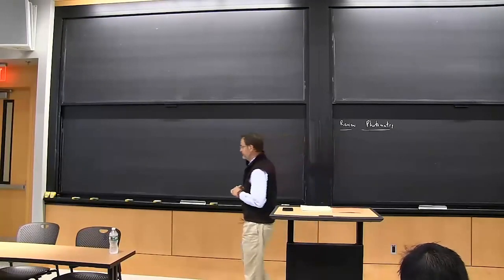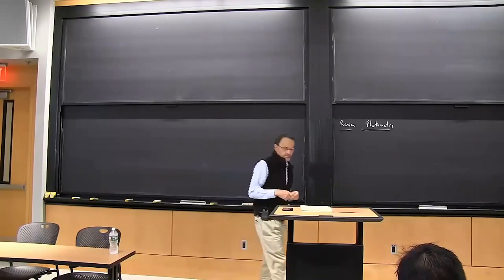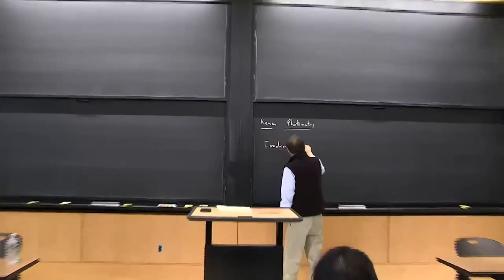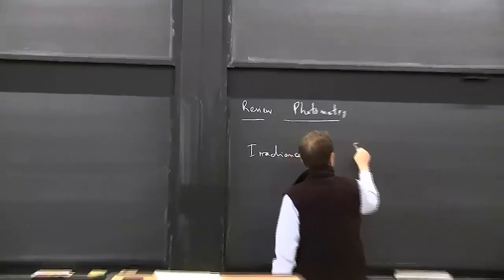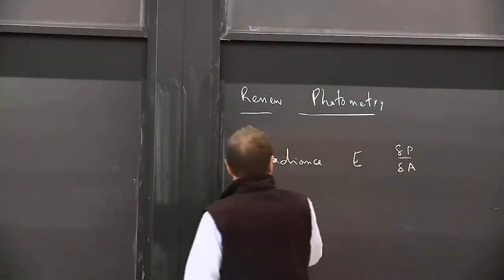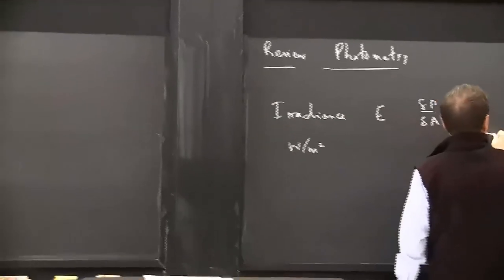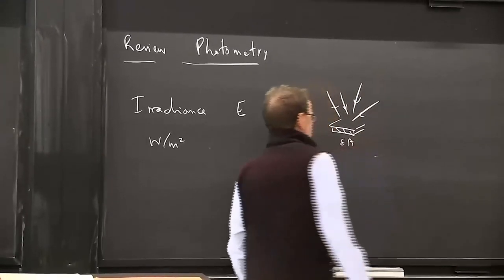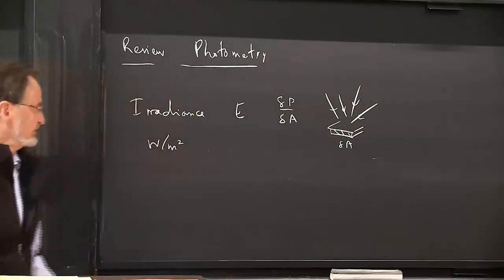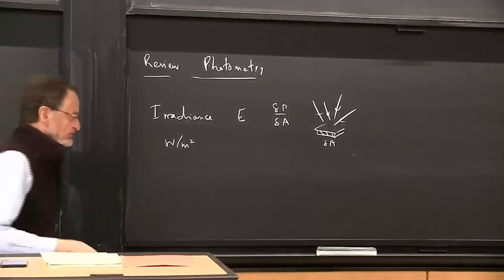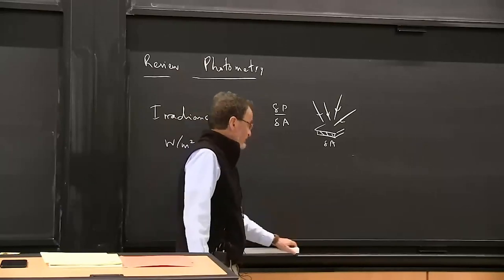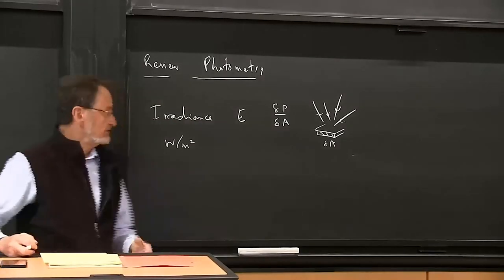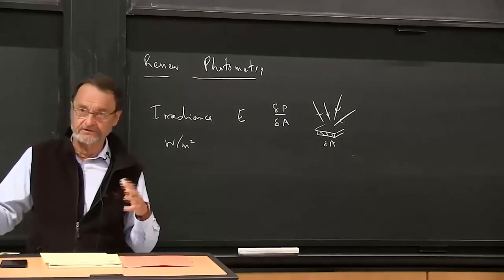Let's have a quick review of what we learned about photometry. There are a number of concepts, one of which was irradiance. We used the symbol E for it, and it was power per unit area. It's a way of talking about light falling on a surface. It's what we measure in the image plane and convert to what's commonly called a gray level. So the quantity of interest here is directly used when we're imaging, and it's also a measure of light falling on the objects that we're imaging.